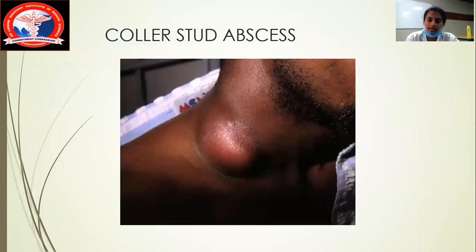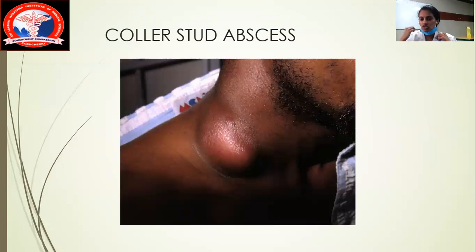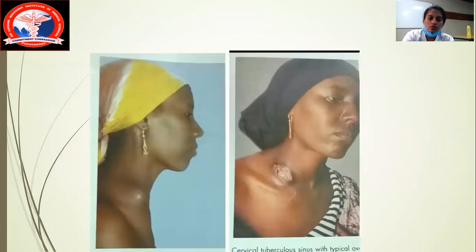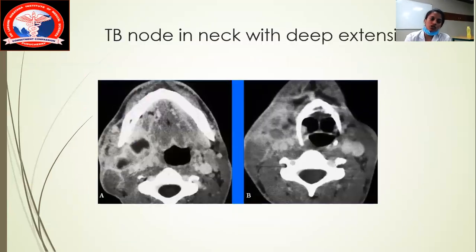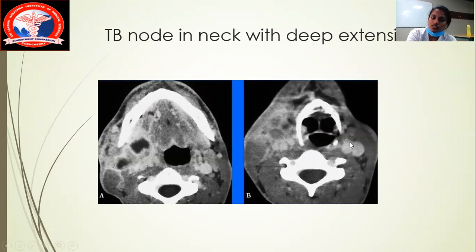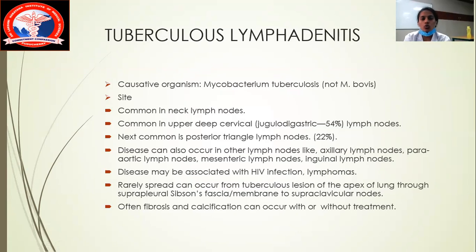In the neck we can expect a collar stud abscess in the collar region — referring to the area around the shirt collar. The cervical lymph node ruptures and the abscess projects out through the skin. Here we can see a TB node with extension into the deeper structures as well.